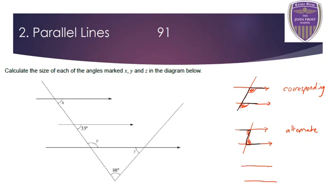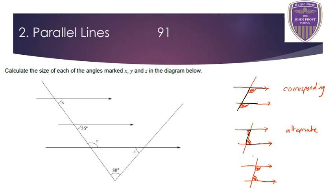The final rule for angles on parallel lines: these two angles that are on the same side of the line and also in between the parallel lines — because they're on the same side and in between, we call them allied. They're together, next to each other, making a C shape. We call these allied angles, and allied angles always add up to 180 degrees.